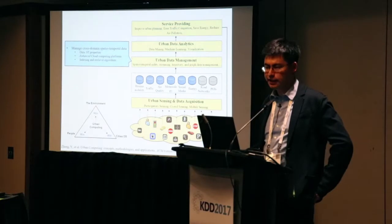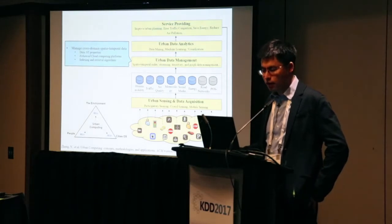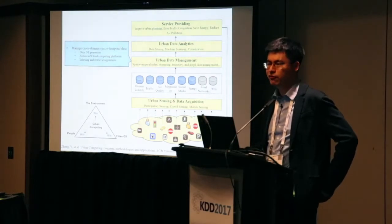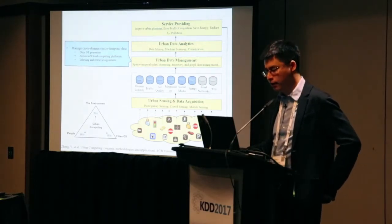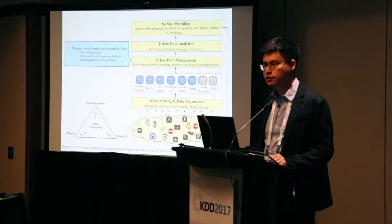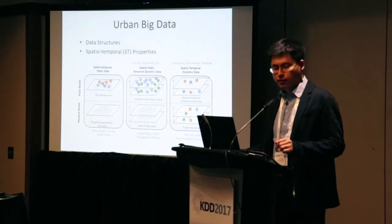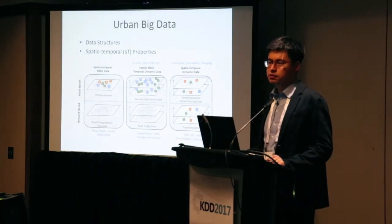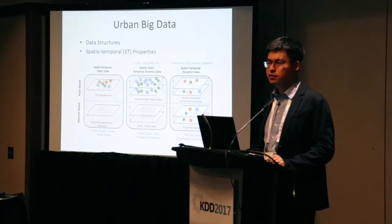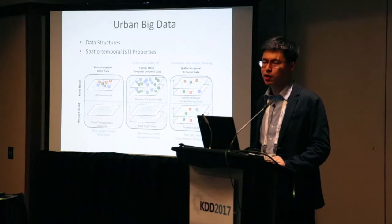Let's look at the data we have in the city. There are tens of thousands of data types generated every day. In terms of data structure, there are only two types: point data and network data. Combined with their spatial-temporal properties, we get three columns: spatial-temporal static, spatial-static/temporal-dynamic, and spatial-temporal dynamic — giving us six data model categories.